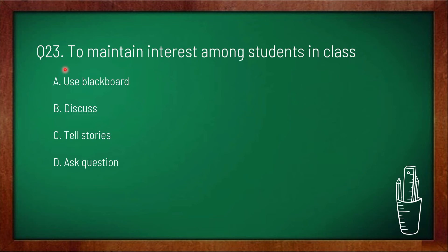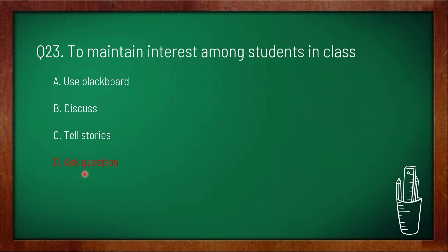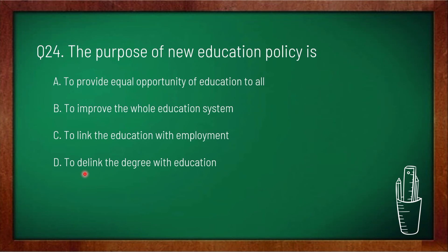Question 23: to maintain interest among students in class — option A: use blackboard, option B: discuss, option C: tell stories, option D: ask questions. Option D is correct. If you want students to be interested in what you're teaching, you must make it interactive — ask them questions. If they answer, that's great; if not, you tell them the answer and explain why.